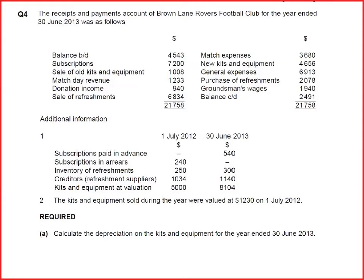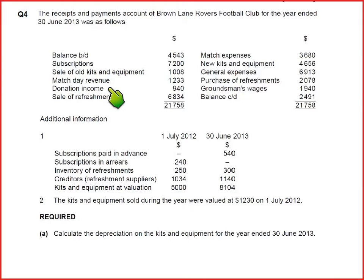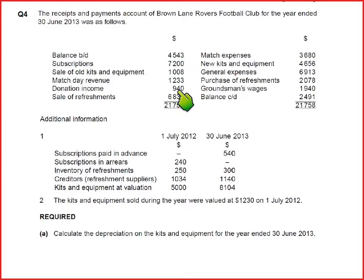Donation income can be of two types: revenue nature or capital nature. If nothing is written in the question, donation is always revenue in nature. If it is a revenue receipt, it is recorded in the income and expenditure account — which is the income statement for a club. But if the examiner specifically mentions that the donation is of capital nature, then it is recorded in the balance sheet — the statement of financial position. In this question, the small amounts of donation are revenue in nature and are always recorded in income and expenditure.